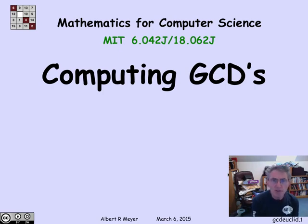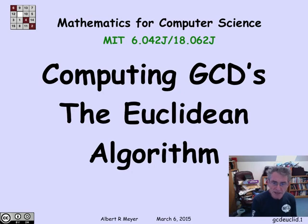The efficient way to compute the GCD of two numbers is based on a classical algorithm known as the Euclidean algorithm, which is several thousand years old. Let's describe how it works now.